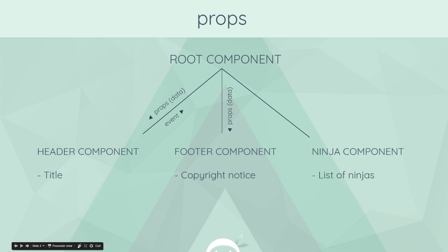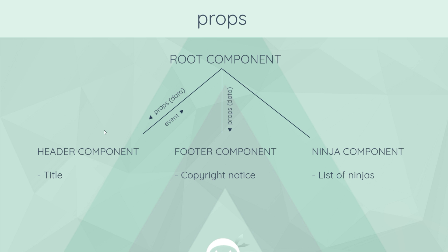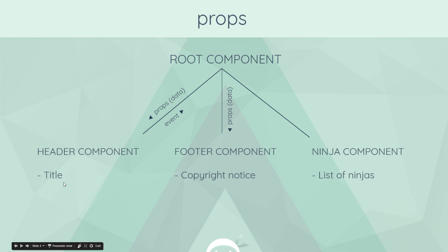In the last tutorial we saw that if we passed a reference type as a prop down to a child component, then if we edited that prop in the child component it would indirectly edit the original data source. However, the opposite was true for primitive types — if we pass down a primitive type such as a string like this title and edit it in the child, it's not going to change in any other component.